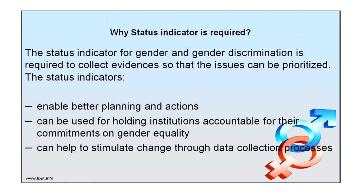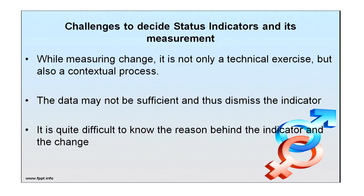Why are status indicators required for gender discrimination, gender empowerment, development and all constructs under gender? The status indicator for gender is required to collect evidence so that issues can be prioritized. Status indicators enable better planning and actions, can be used for holding institutions accountable for their commitments on gender equality, and can help stimulate change through data collection processes.